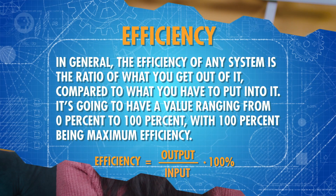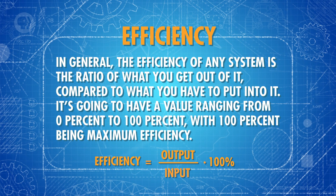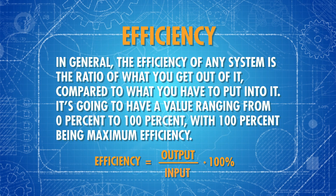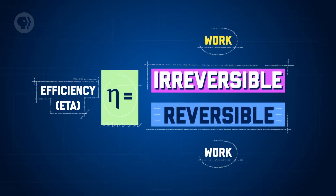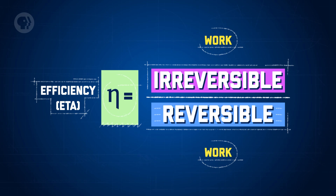Which brings us to efficiency. In general, the efficiency of any system is the ratio of what you get out of it compared to what you have to put into it, with a value ranging from 0% to 100%, where 100% is maximum efficiency. Efficiency helps quantify how close the system is to perfectly reversible — it's the amount of work produced by the system as a percentage of the work that would be produced by the ideal but impossible reversible system. The result is eta, the efficiency. If something is 100% efficient, it's a completely reversible system; if it has zero efficiency, it's totally irreversible.